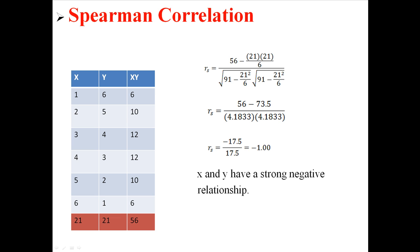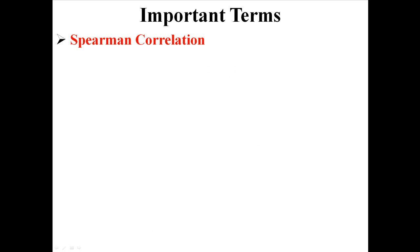So we're going to say that x and y have a strong negative relationship, whatever they are, using the Spearman correlation for ordinal data, for ranked data.